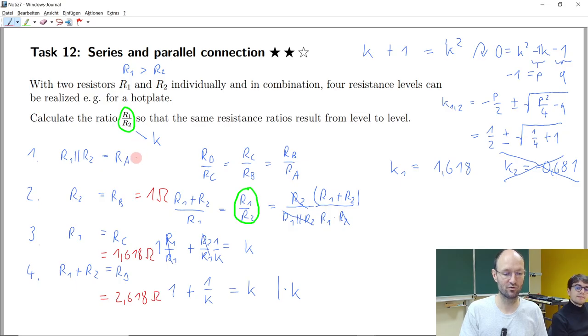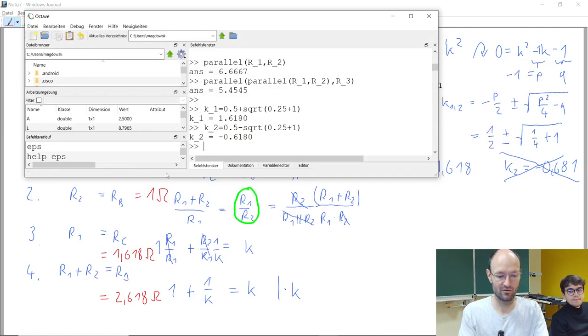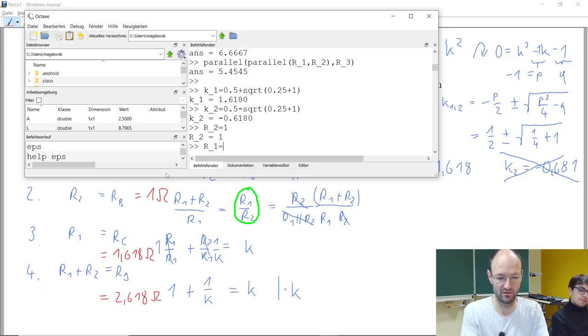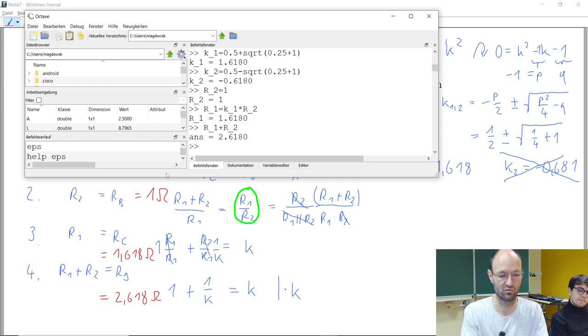And if you do the calculation here. So R2 I just said is 1, R1 is K1 times R2. So we have this R2, R1 plus R2 is the 2.6 something.